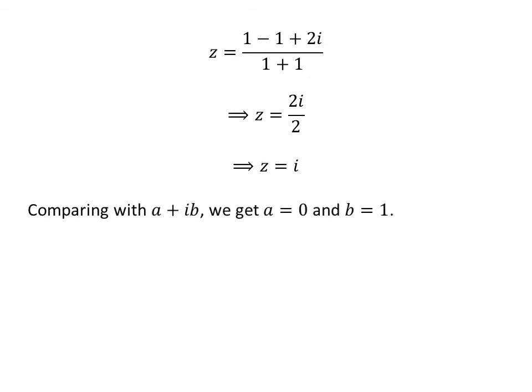Comparing z with a + ib gives us a = 0 and b = 1.